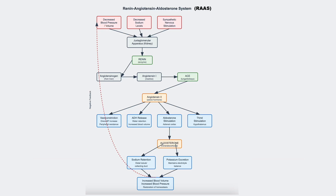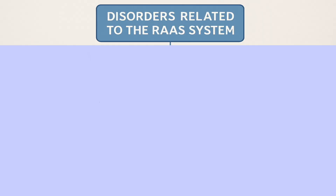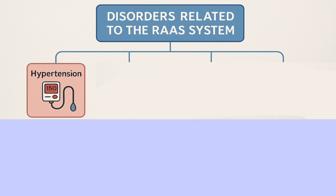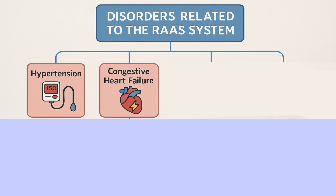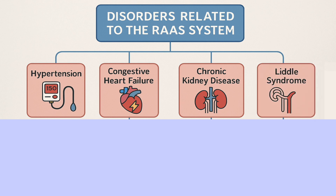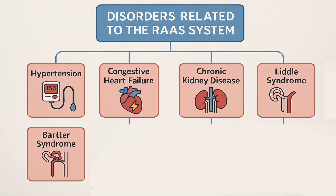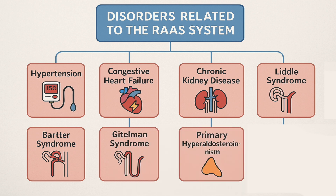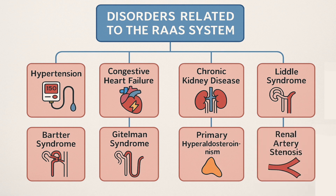Now let's see the diseases related to the RAS system. These include: hypertension, congestive heart failure, chronic kidney disease, Liddle syndrome, Bartter syndrome, Gitelman syndrome, primary hyperaldosteronism, and renal artery stenosis.